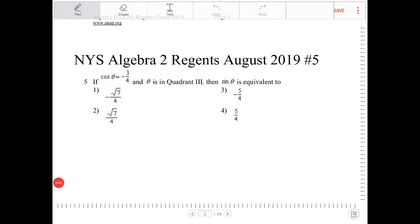If cosine theta is equal to negative three-fourths and theta is in quadrant three, then sine theta is equivalent to what?